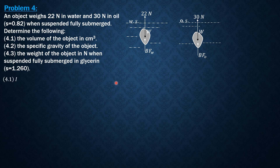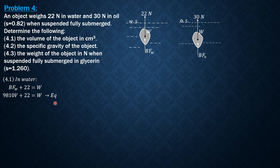In water, summation of forces in Y equals 0. The equation is: buoyant force in water plus 22 equals W. The buoyant force in water is the specific weight of water, 9810 N/m³, times the volume of the object V in cubic meters, plus 22 equals W. Call this equation 1.